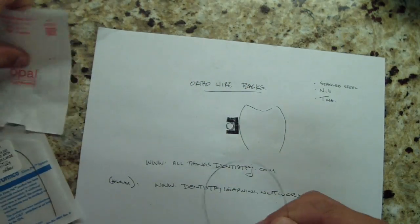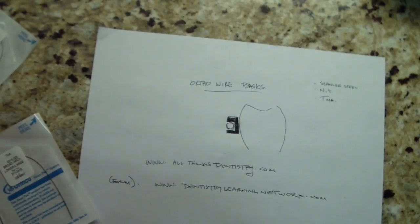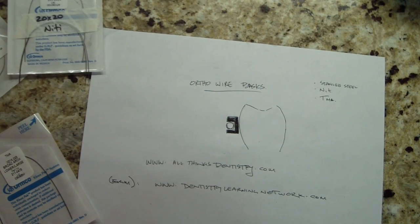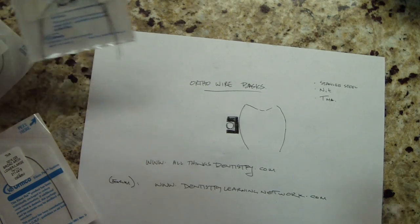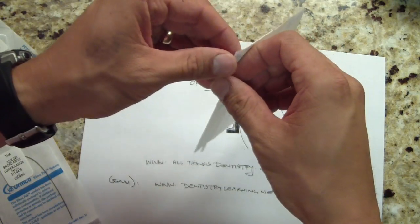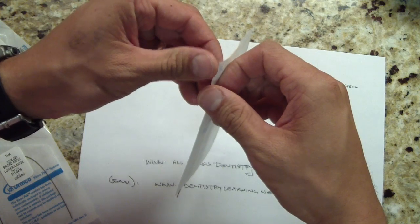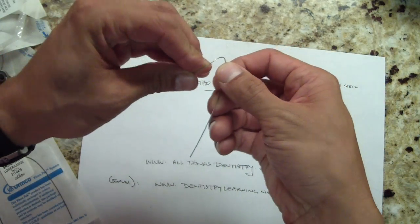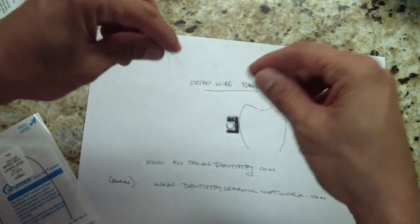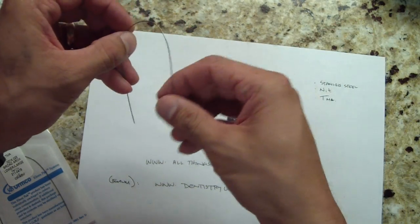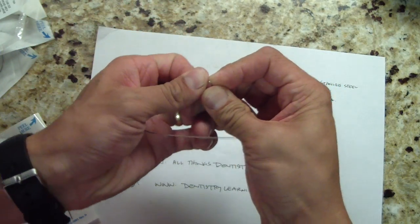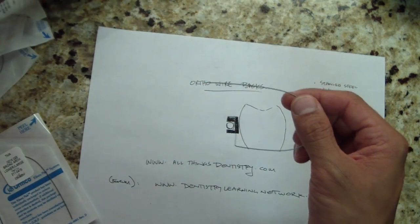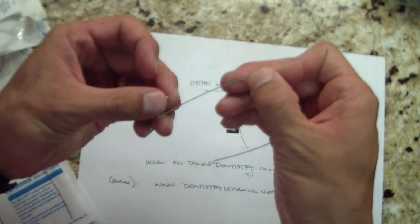So that's nickel titanium Ni-Ti, and the last one is TMA. TMA is similar to Ni-Ti but it can be bent just like stainless steel. We say it's more like a finishing wire and it's difficult to slide things on. You can see how it kind of goes back to its original shape, but you can actually put a bend in it if I had the right pliers.